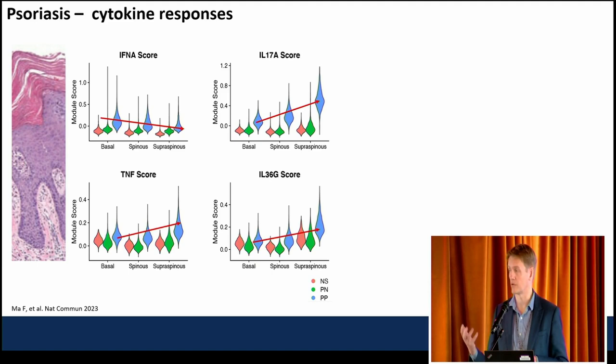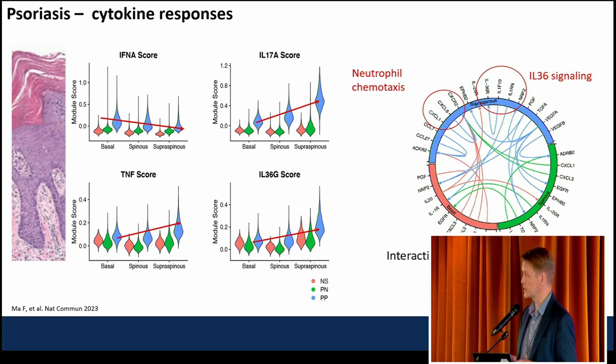That's where you have the feed-forward amplification of psoriasis that is really critical in driving the disease process. If you look at neutrophil and IL-36 signaling, you can see that it's an autocrine loop that is active in the supraspinous compartment of the epidermis — that's where that communication is mostly active.